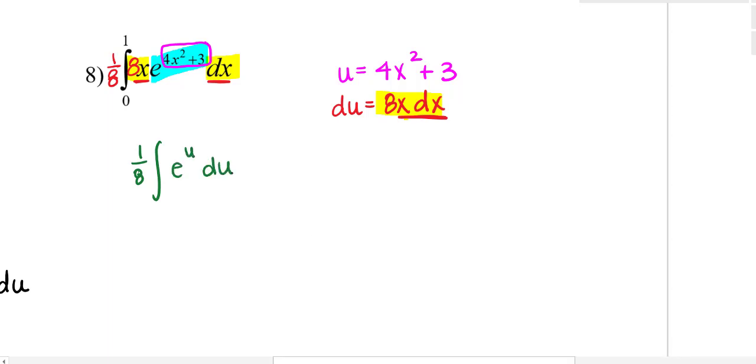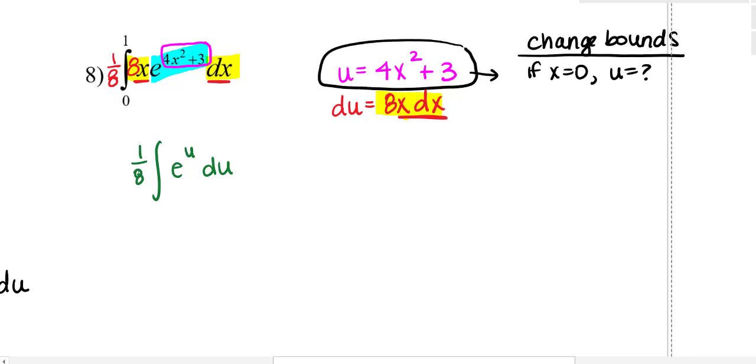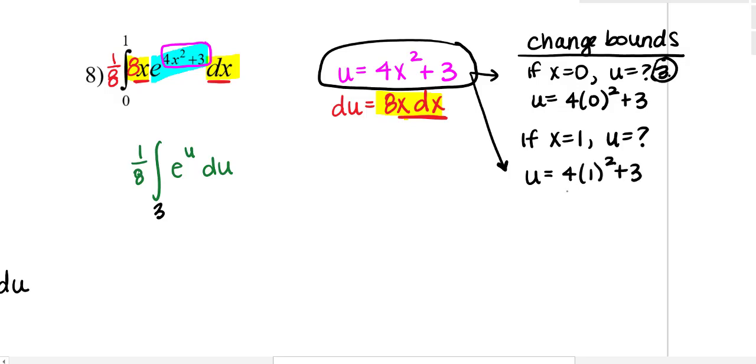And then the leftover here is the blue, and that's just e to the u. So I have e to the u du inside, and now don't write down 0 to 1 because those are x's, so I will change them. I'm going to write change bounds. So if x equals 0, what is u? So I'll substitute that into this equation. So now u would be 4 times 0 squared plus 3, or 3. So my lower bound will be u equals 3. And then my upper bound here, if x equals 1, what is u? Well, u equals 4 times 1 squared plus 3, or 7.